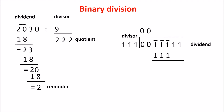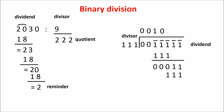We compare the first 3 most significant bits of the dividend with the divisor 7. This time the divisor is equal to the dividend portion, so we put a 1 as quotient. Then we perform the subtraction, which is 0. We consider the next digit and make another comparison — the divisor is bigger, so we write a 0 as quotient and drop the last digit. We compare again and the divisor is still bigger, so we put a 0 in the quotient. We've used all the dividend bits, so the division is finished. The quotient and remainder are read off — the remainder is less than the divisor, as it should be.